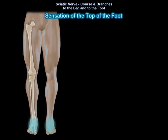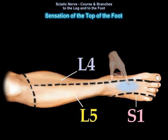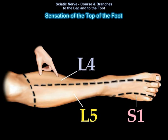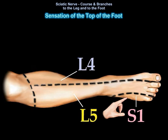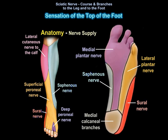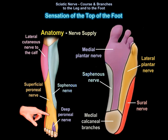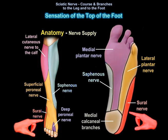The sensation of the top of the foot: the top of the foot is L5, the medial side is L4, and the lateral side is S1. When looking at which nerve is involved at the top of the foot, the first web space is supplied by the deep perineal nerve, the top of the foot is supplied by the superficial perineal nerve, and the lateral side of the foot has the sural nerve.